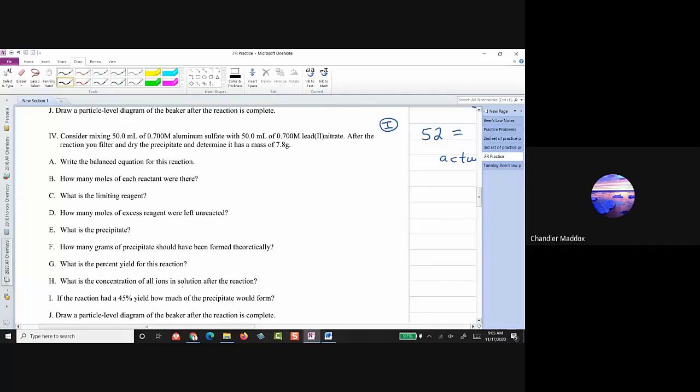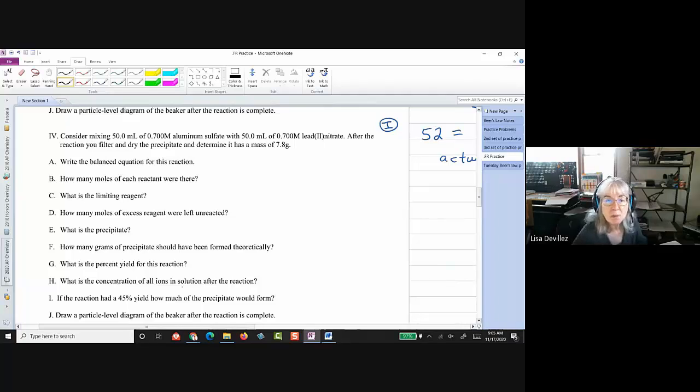Do you mean reaction type by like the... Like a single replacement, double replacement, that kind of thing. Mm-hmm. Yep. So, you'll, and you'll be able to use that table, so you'll need an ion sheet, your solubility table to identify the precipitates, the reaction type table, and a periodic table.